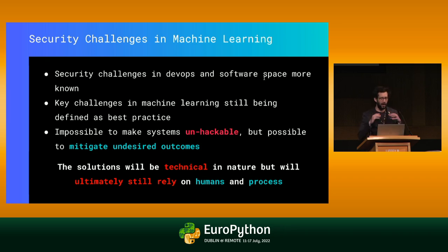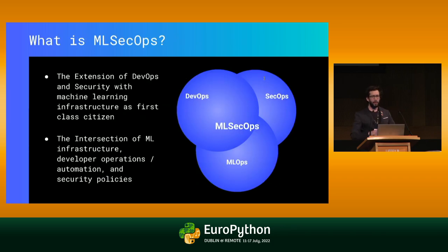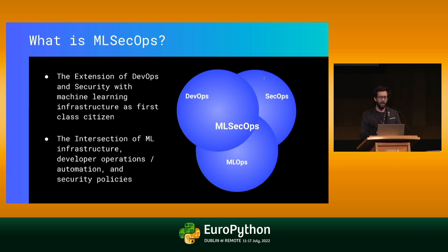One thing we have to remember is that even though solutions will be largely technical in nature, they're always going to rely on humans and process. When it comes to security, you may create a highly robust system with minimal vulnerabilities, but humans are still involved and there can still be potential for social engineering that can open loopholes. So we're also going to talk about MLSecOps — the intersection of DevOps, SecOps, and MLOps — with machine learning as a first-class citizen.